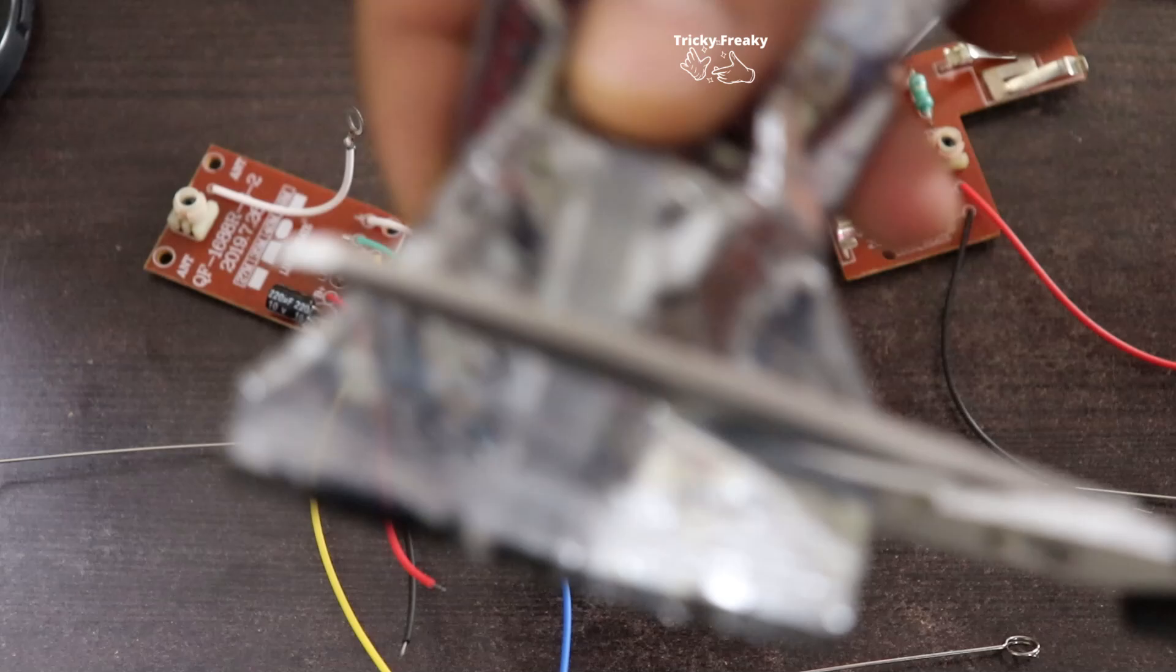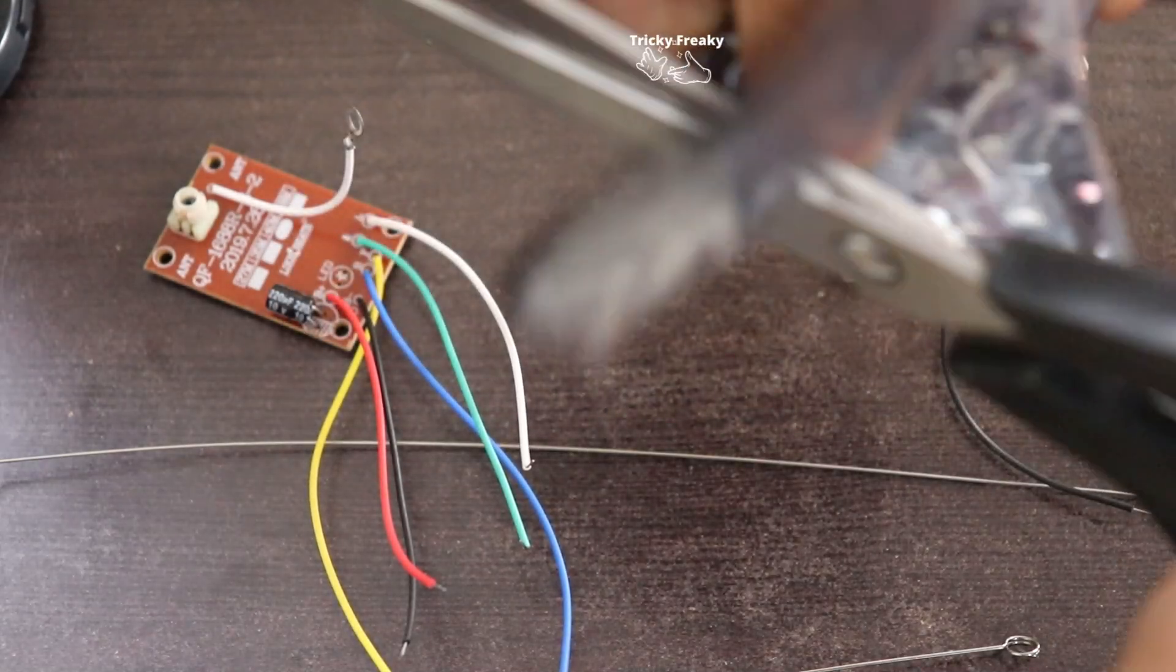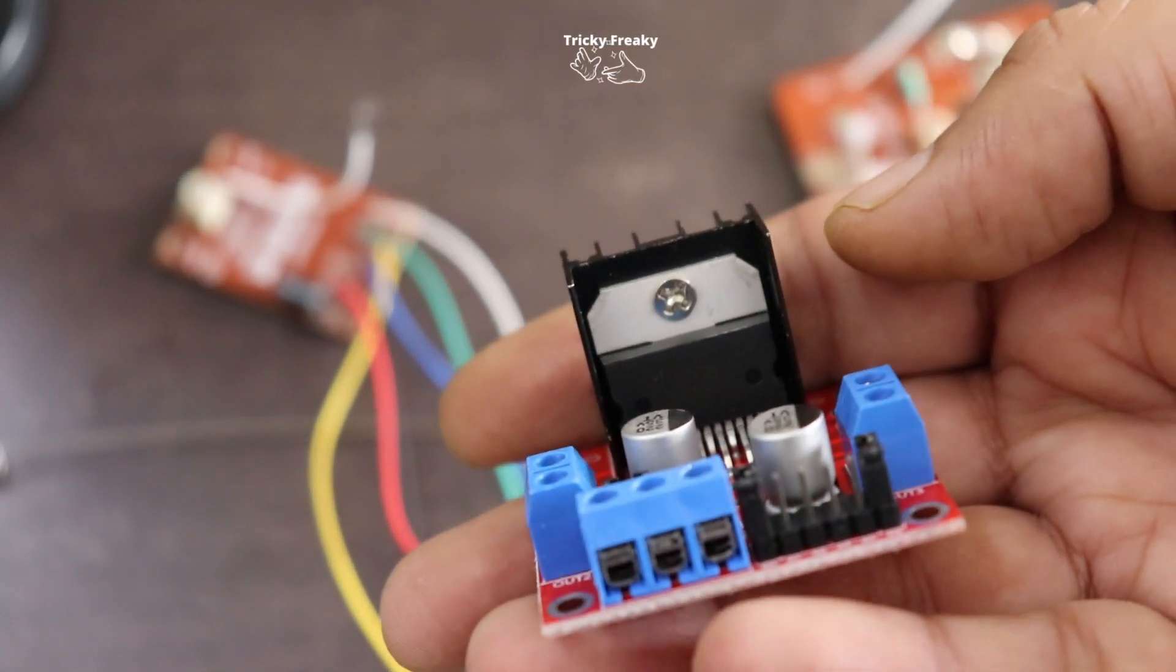V minus and V plus are for the battery. I've used a two amp dual motor driver, which is a 298N. This can easily run heavy motors up to two amps.